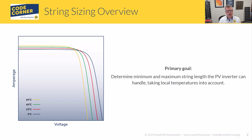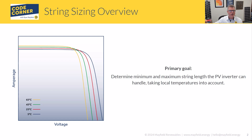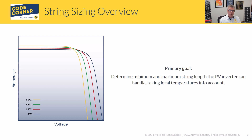Interestingly enough, when you relate this to code — because this is CodeCorner and we're talking about codes and standards — all that code cares about is that open circuit voltage and that cold temperature. As designers and engineers, we're really worried about both: the open circuit because that can actually damage the inverter, but we also care about where it's operating. So we'll talk about that as well.